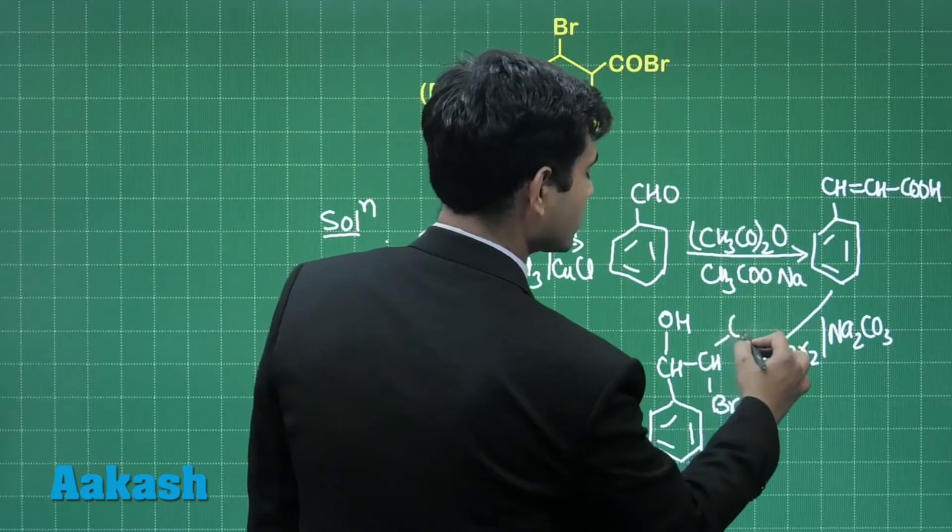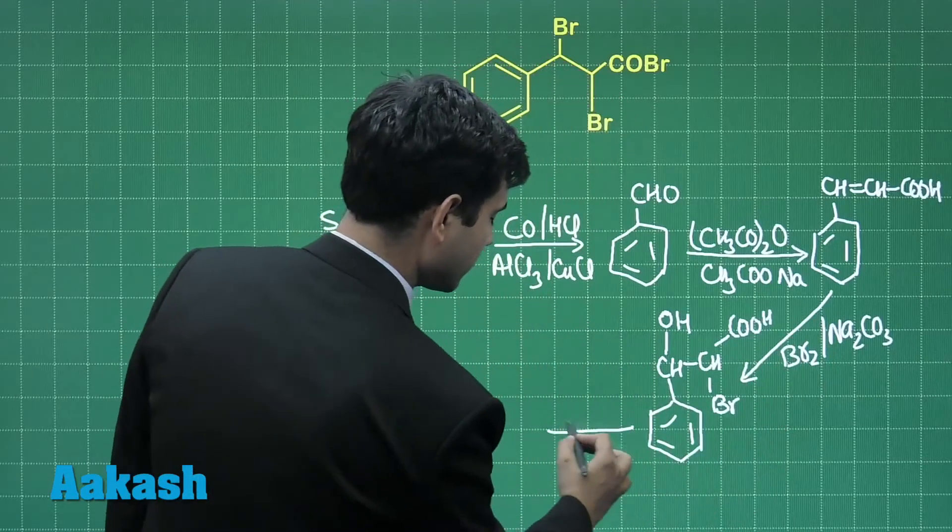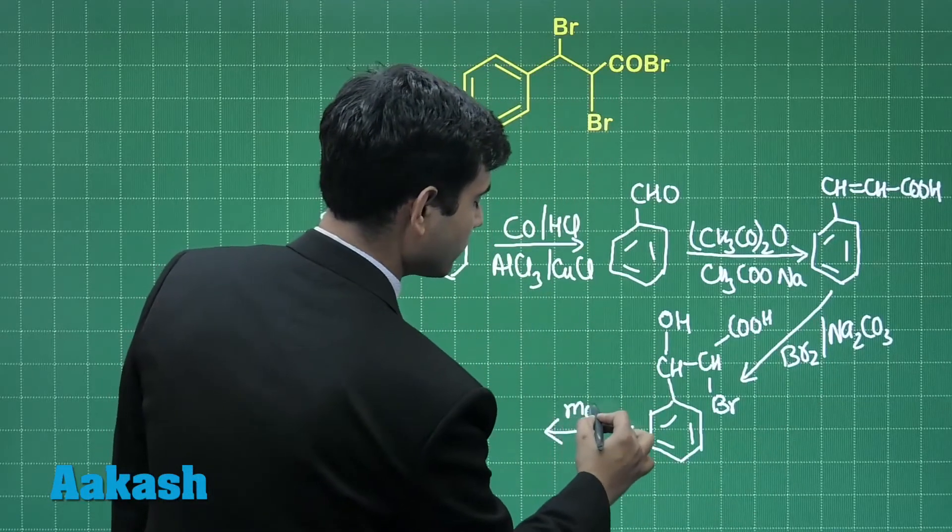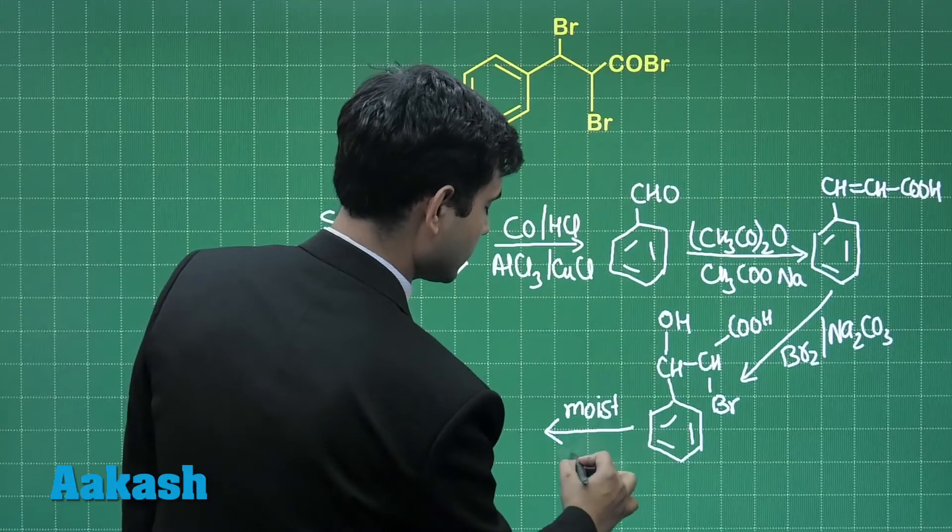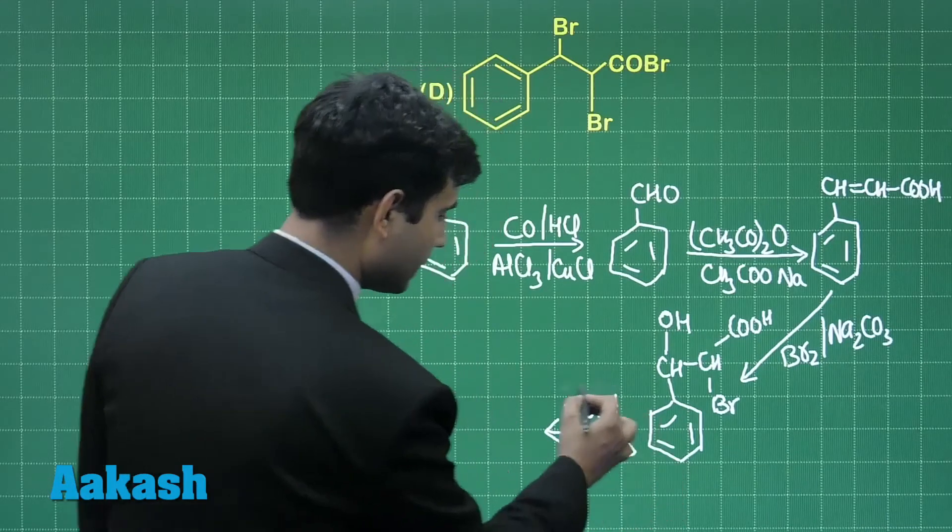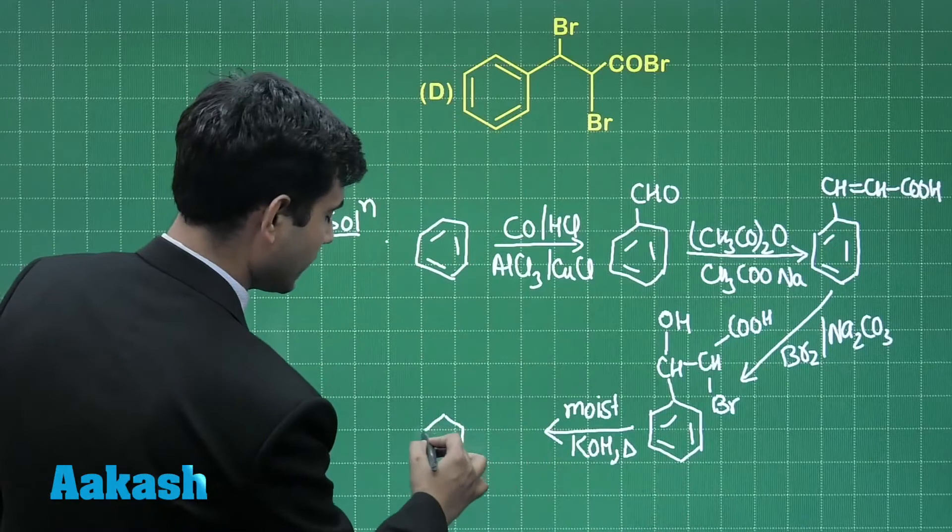When this is heated in moist potassium hydroxide, elimination takes place and we'll get alkyne.